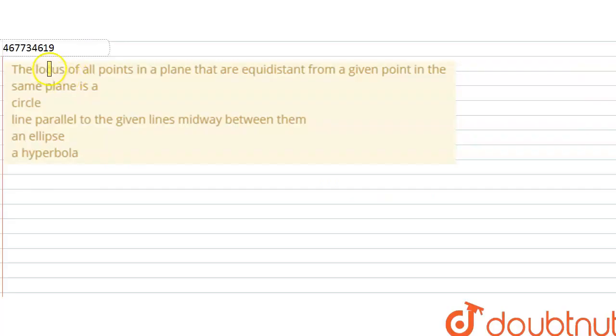Hello friends, the question is: the locus of all points in a plane at a required distance from a given point in the same plane is: a circle, line parallel to given lines midway between them, an ellipse, or a hyperbola. So tell us in these four options which is the right answer.